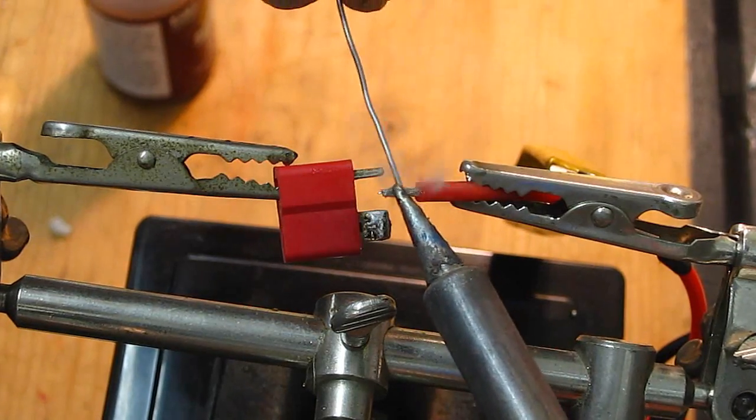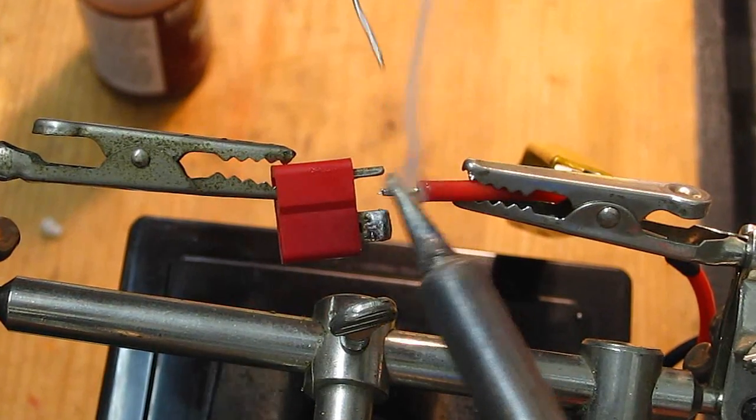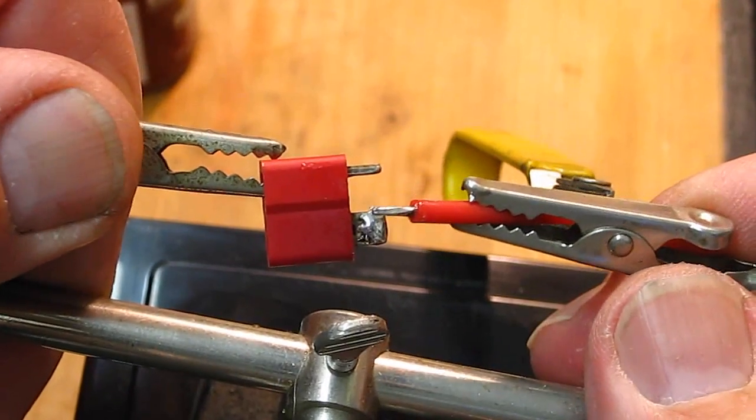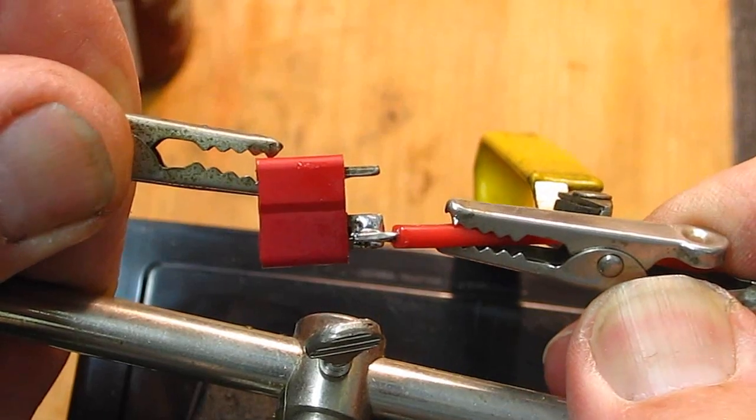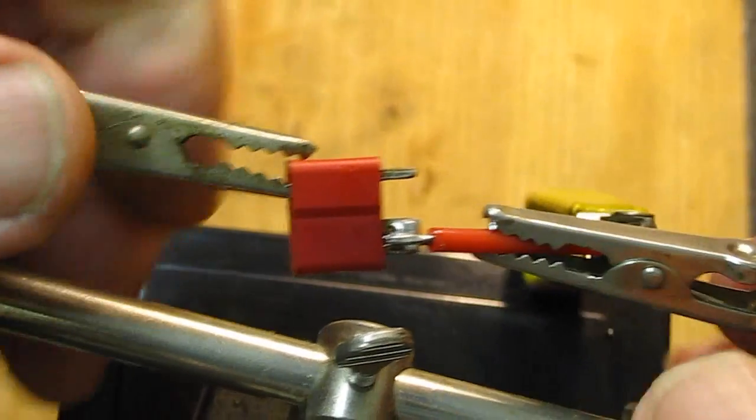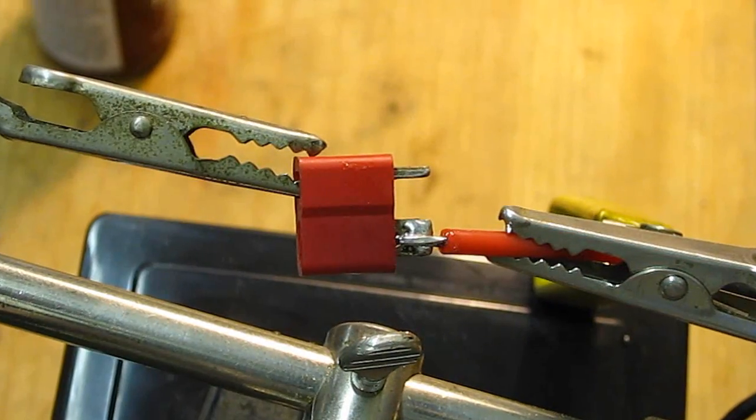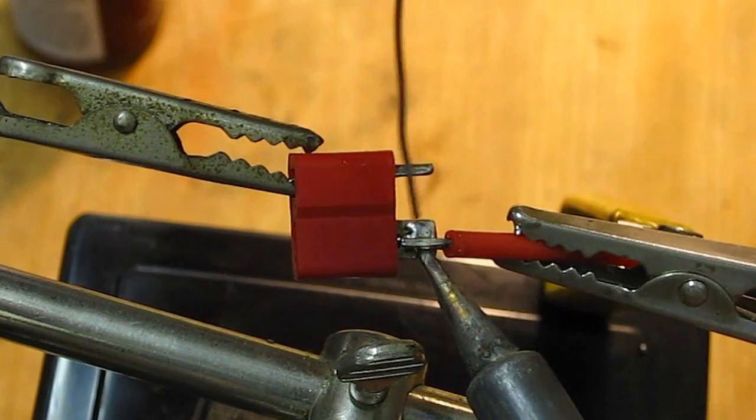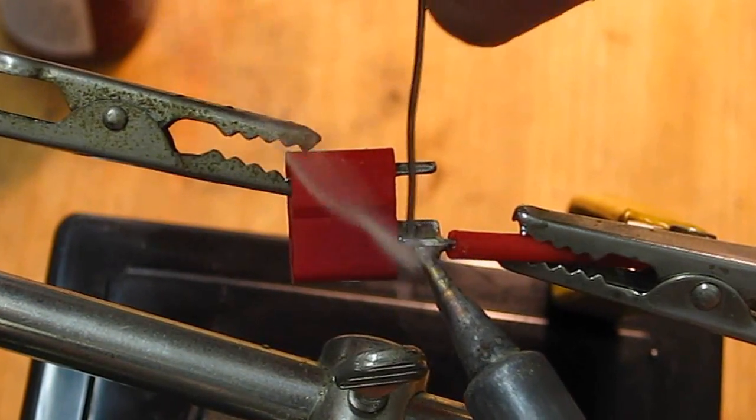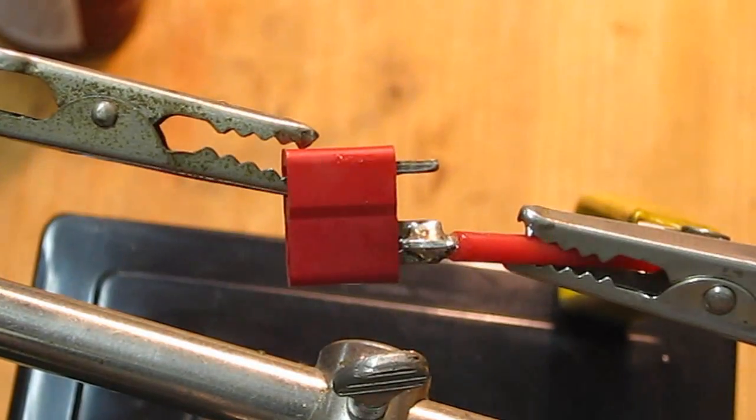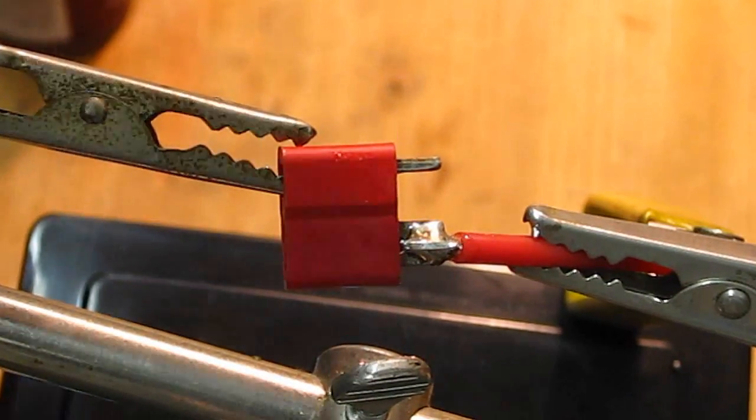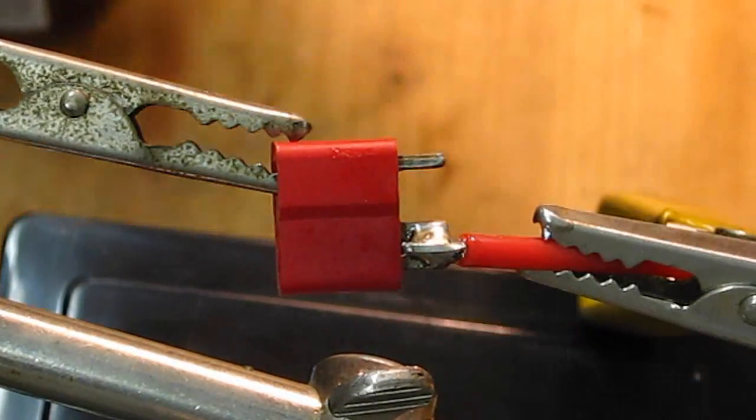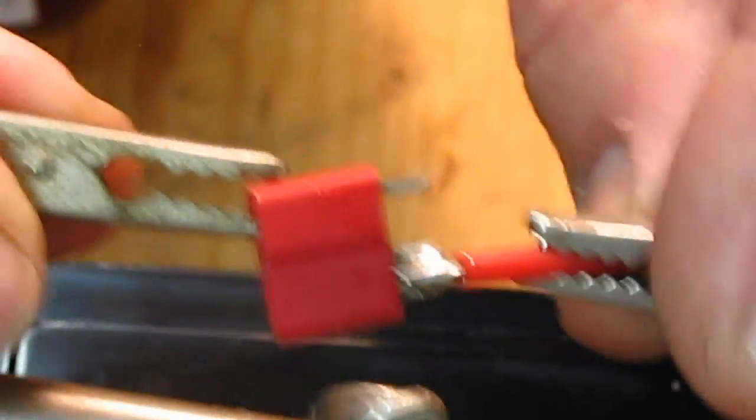Now we just simply lay the two together and again apply the heat. With Dean's connectors you don't want to heat them up too much or you will have a melted connector.